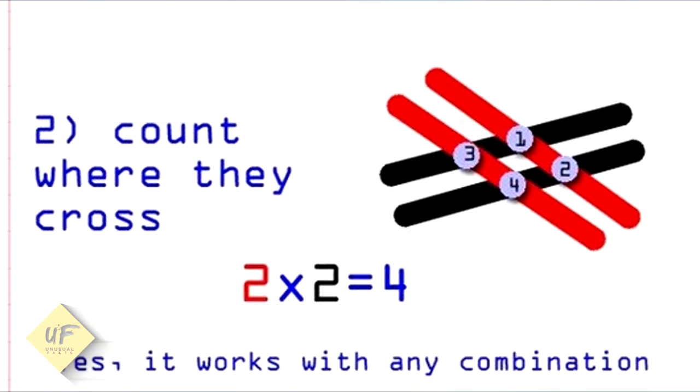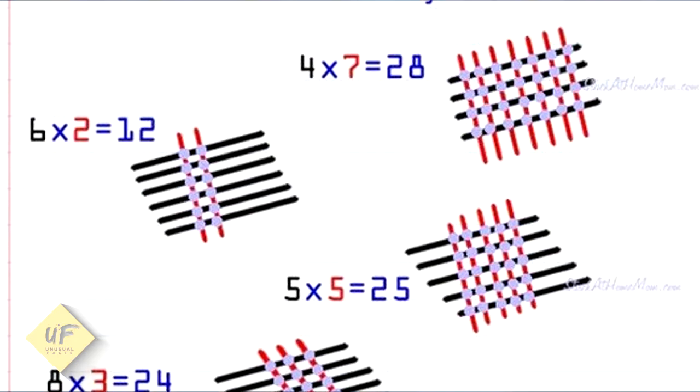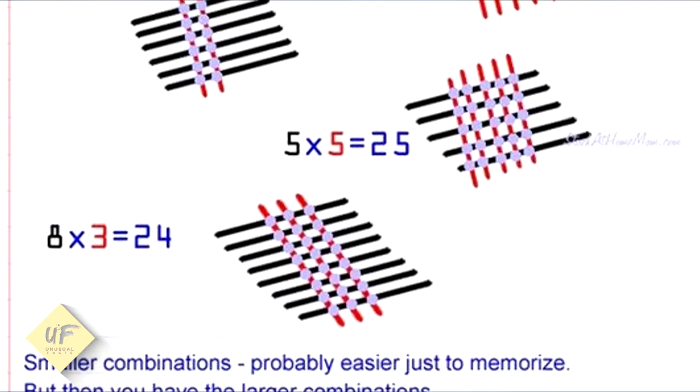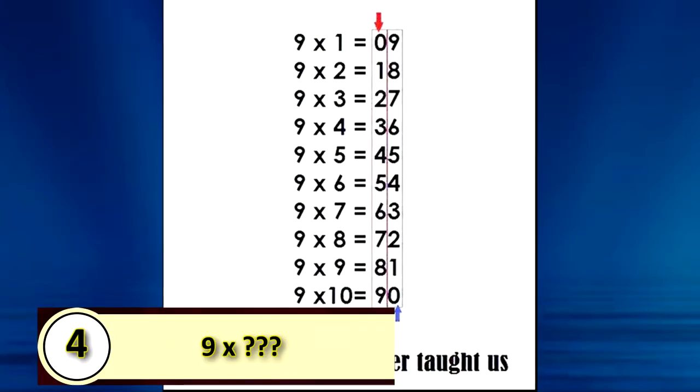Some of those smaller combinations are probably just easier to memorize. But when you have a larger combination like 13 times 12 equaling 156, you may just want to break it up. That looks easy enough. Moving on to number 4.